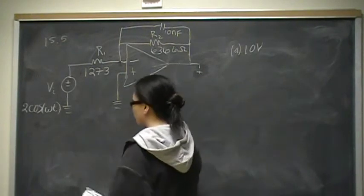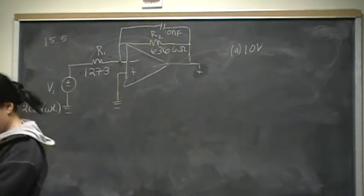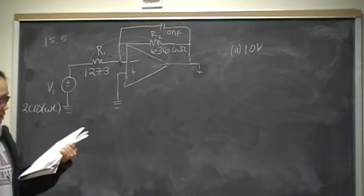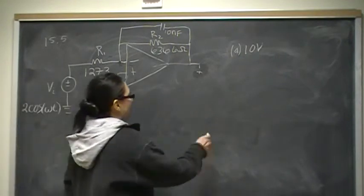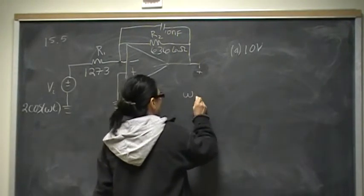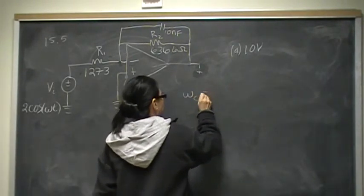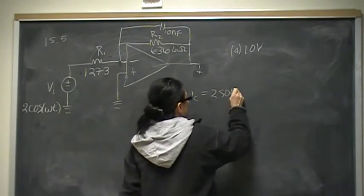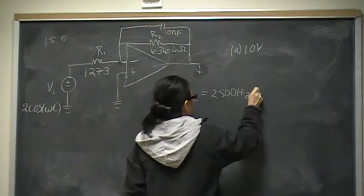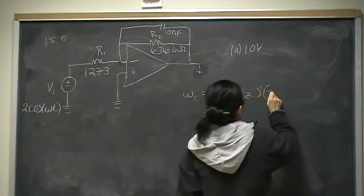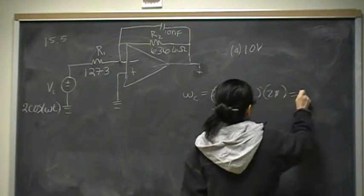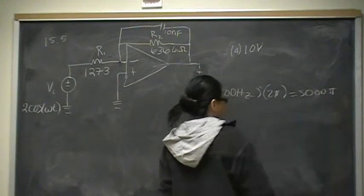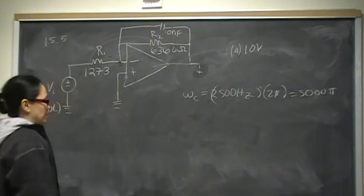Part b says: find the output voltage when the frequency is the cutoff frequency. Our cutoff frequency, remember, was 2,100 hertz, and we have to multiply that by 2 pi, so that gives us 5,000 pi radians per second. That is our cutoff frequency.